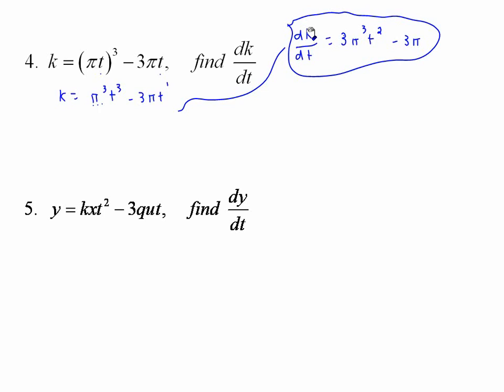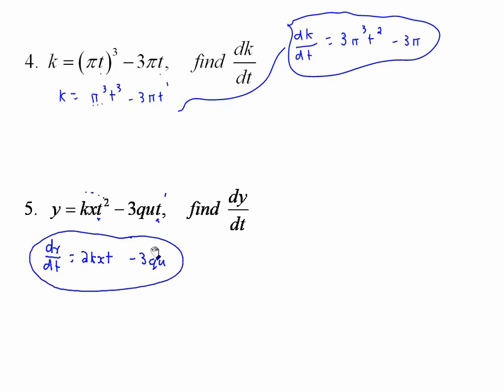Number five is also with respect to t, and we have other variables present. When taking dy/dt, t is the only variable — k and x are just constants. So dy/dt: multiply 2 by kx and get 2kx times t to the 1, and then 1 times 3qu gives 3qu times t to the 0, which drops the t. So k, x, q, and u are just numbers — only t is differentiated.